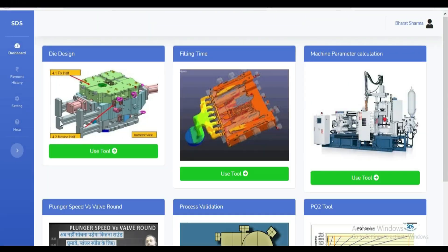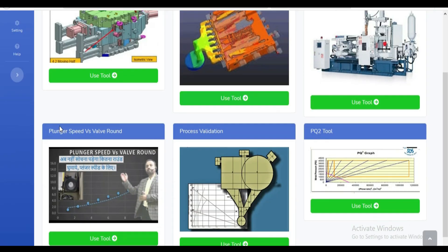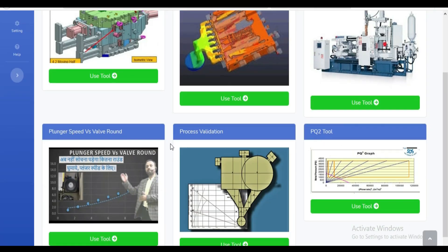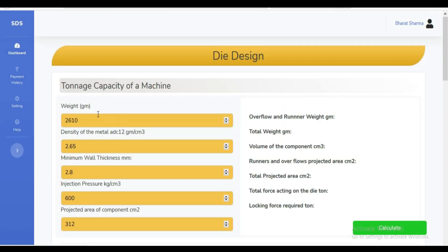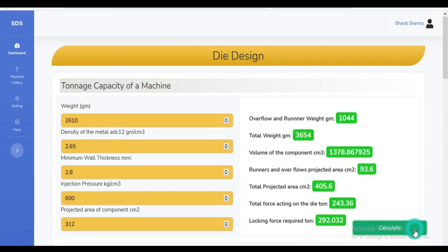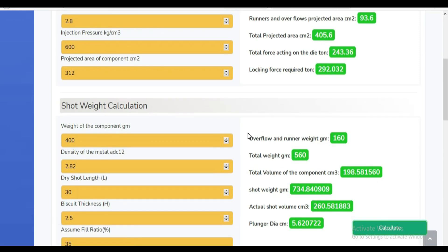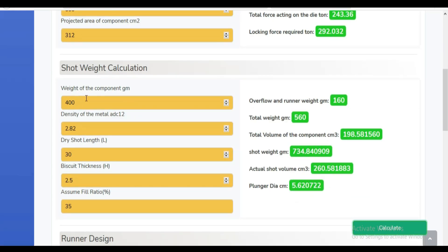In this software, you can use six tools: die design, filling time calculation, high-pressure die casting machine parameter calculation, process validation, and most unique tool, PQ square analysis.